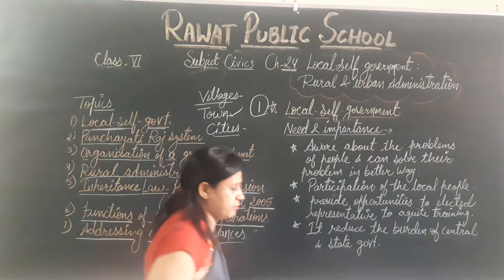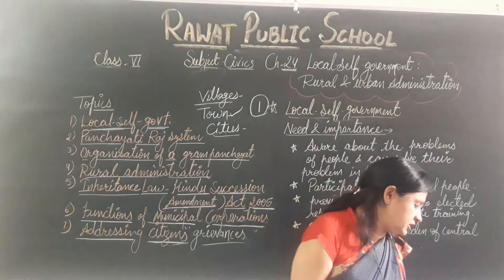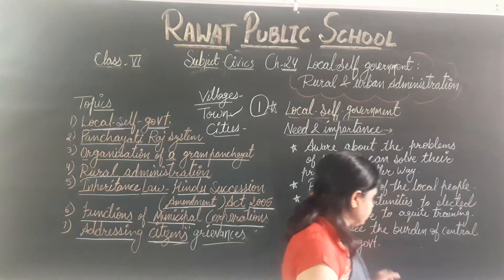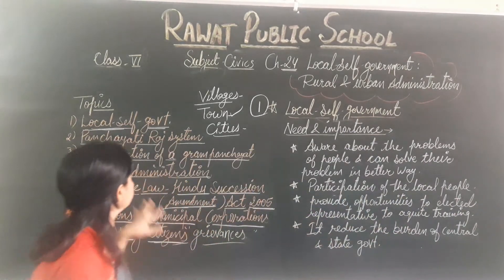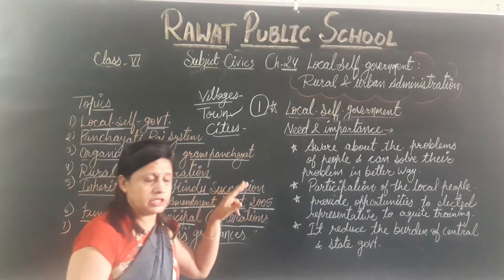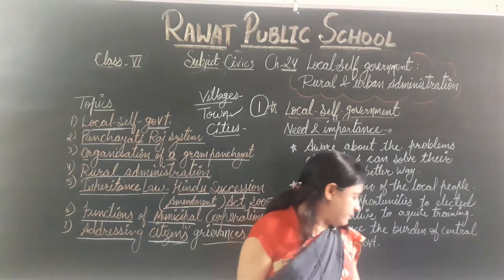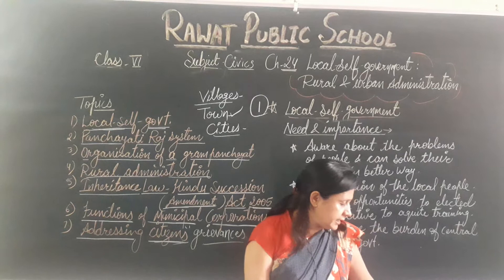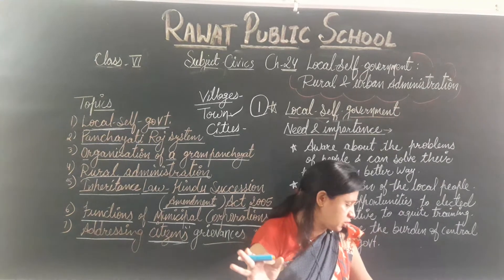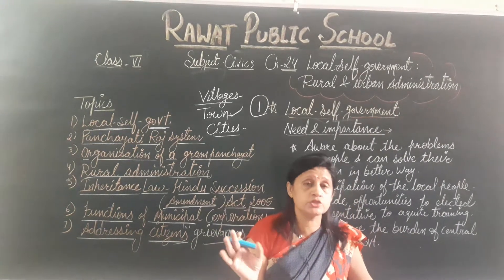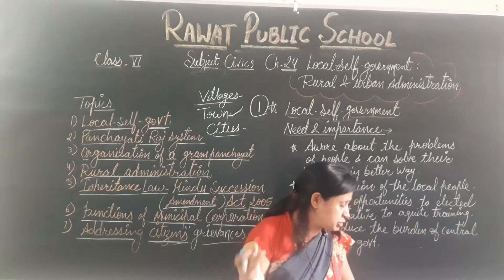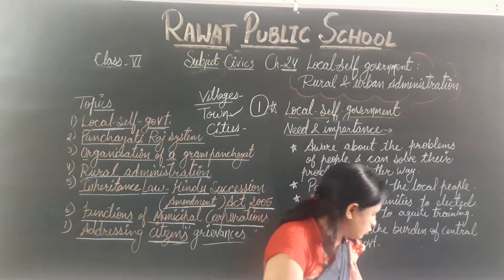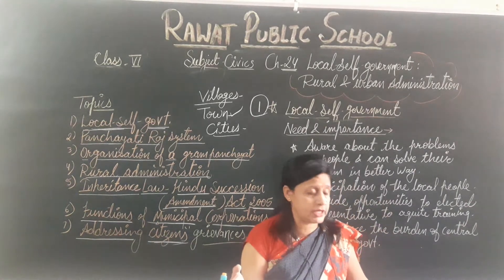So these are the needs and importance of the local self-government. Now we will discuss about the Panchayati Raj system. The Panchayati Raj system works at three levels: first is Zila Parishad, second is Block Panchayat Samiti, and third is Gram Panchayat Samiti at the village level. It is also given in your book on page number 200 with a diagram.